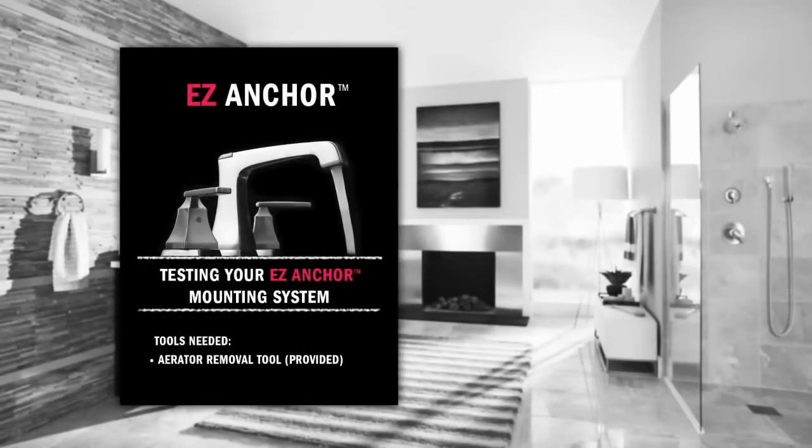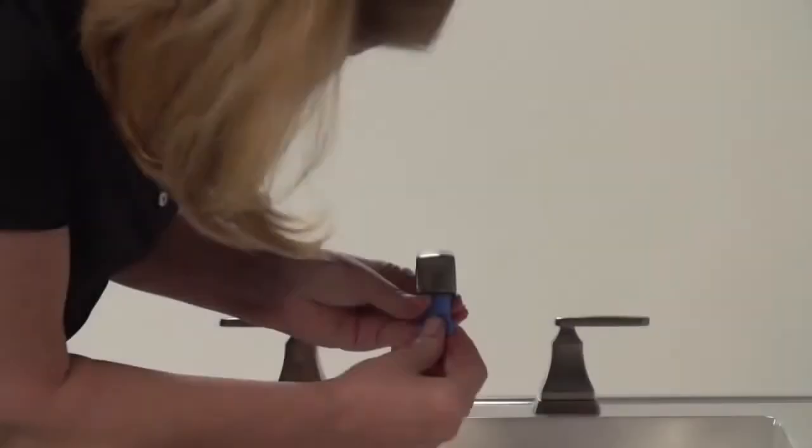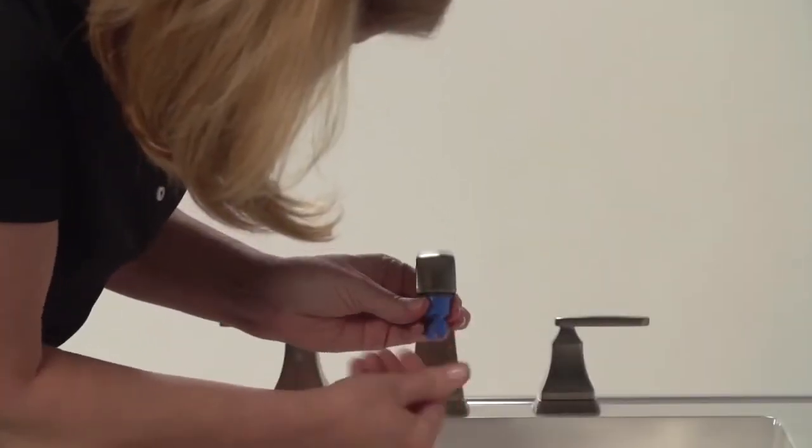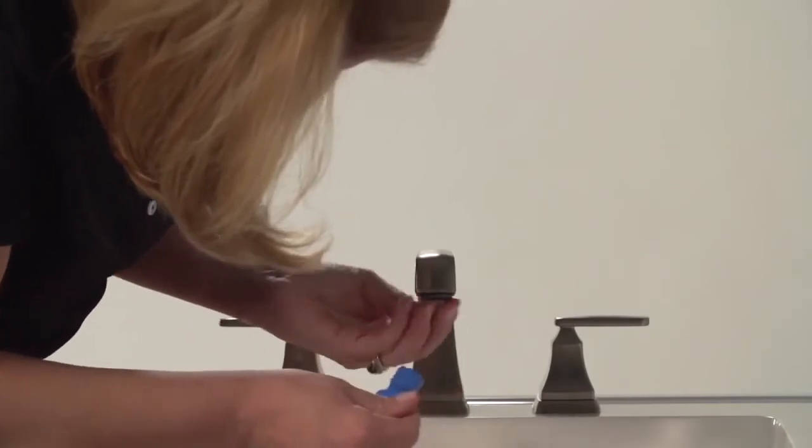Now we're ready to put it to the test. Make sure all of your connections are tight and then remove the aerator outlet from the spout using the special removal tool.